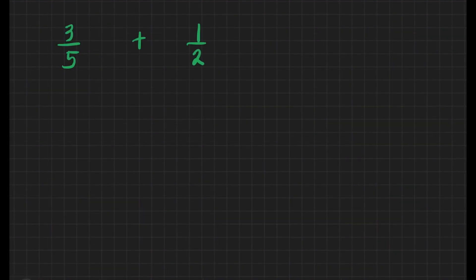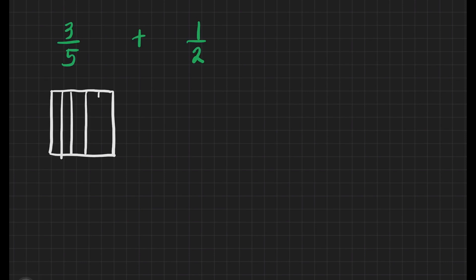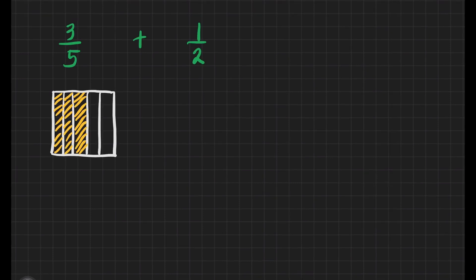Let's have another example. We have here 3/5 plus 1/2. Let us first draw 3/5 — let's divide it into 5 parts and then color 3 parts. Now let's draw the 1/2 — we'll divide it into 2 and color 1 part.